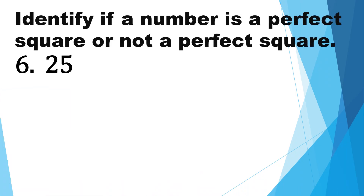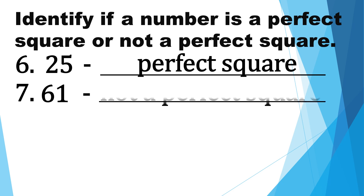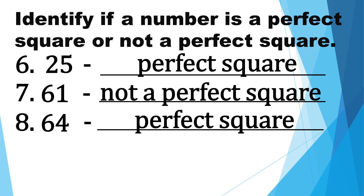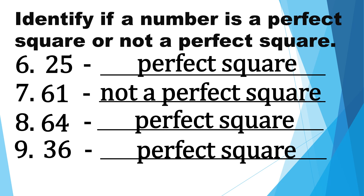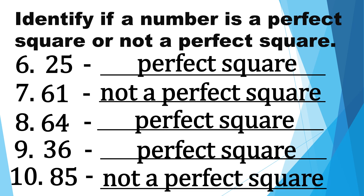Number six: twenty-five. Twenty-five is a perfect square. Number seven: sixty-one. Sixty-one is not a perfect square. Number eight: sixty-four. Sixty-four is a perfect square. Number nine: thirty-six. Thirty-six is a perfect square. Number ten: eighty-five. Eighty-five is not a perfect square.